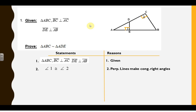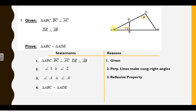Angle one is congruent to angle two. Perpendicular lines make congruent right angles. After we're done with our givens, we look for the reflexive property or vertical angles. One thing you don't realize until similarity is that angles can also be reflexive. Both triangles ADE and ABC have angle A in them, so we use that as our reflexive property: angle A is congruent to angle A, reflexive property. I have two congruent angles and no sides given, so I know I'm using an angle-angle proof, and I can say the triangles are similar.